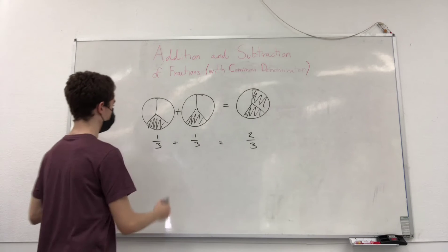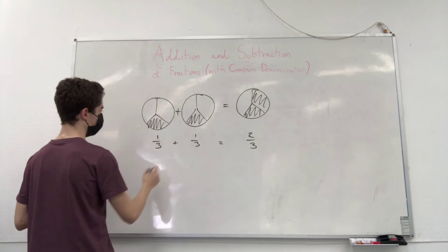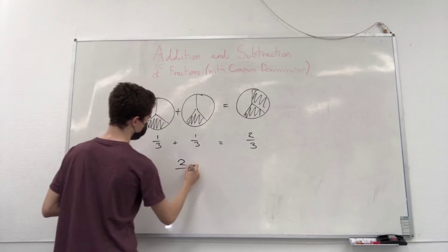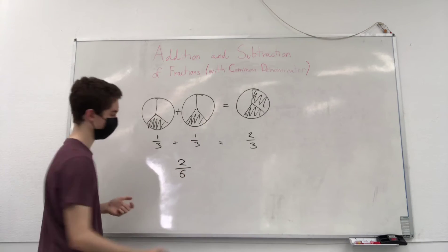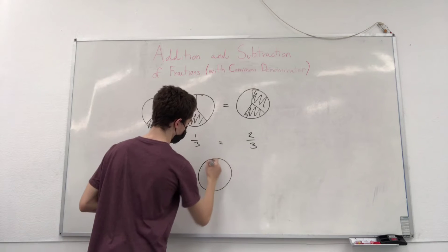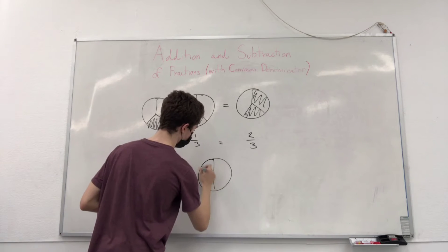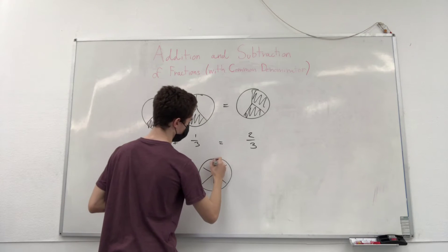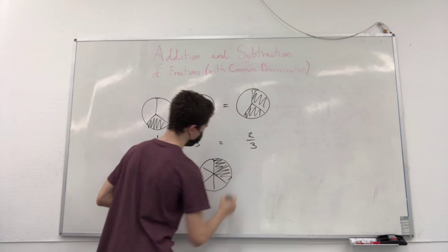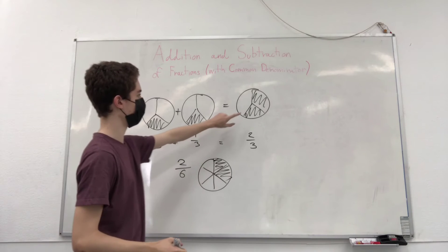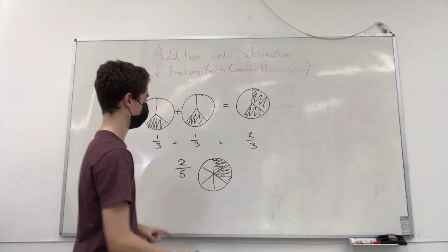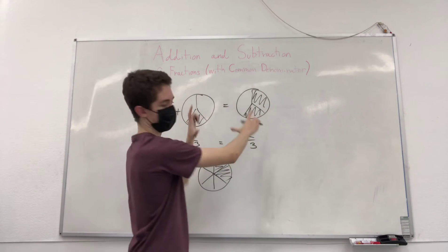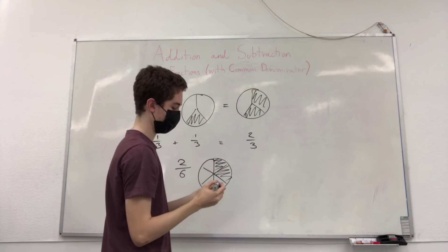Well, how would that be then? If we were to add the bottom and the top, then you would get one plus one is two, three plus three is six. And that would be if we were to draw that pizza, you would have a pizza that's split into six parts, right? Because the bottom is six. And you would have two of those parts. And we can see that this is not the same as this, because here we have a much smaller part of the pizza, while here our result was almost more than half of the pizza. So it doesn't work.